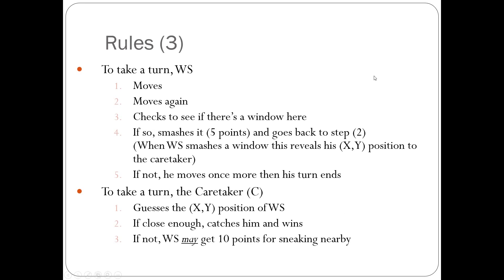The rules are generally straightforward. The window smasher moves twice, then checks if there's a window at his position — windows are always at locations where both X and Y are even. If he lands on a square with a window, it gets smashed and he gets five points, then the cycle repeats. If he doesn't smash a window, he has one more move and his turn ends. When a window gets smashed, it reveals to the constable where it happened as a clue.